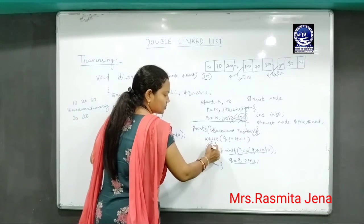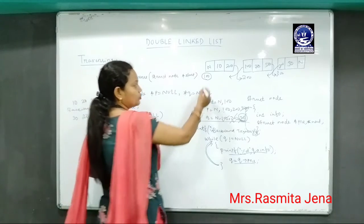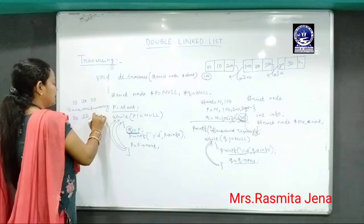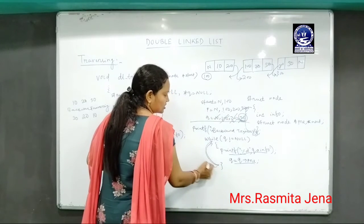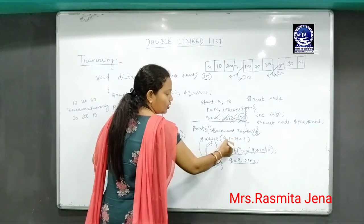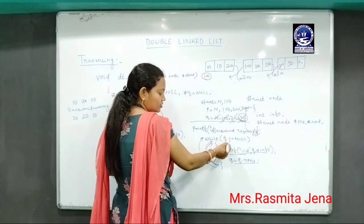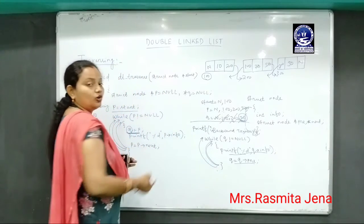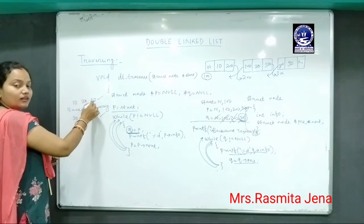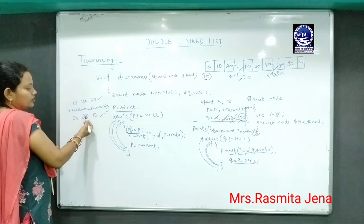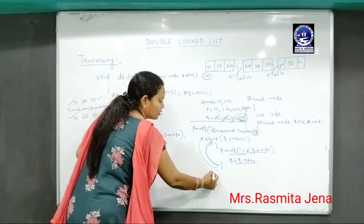As q becomes 100, I check the condition again: 100 not equal to null is true, so I display 10. Then q equals q->pre, so q becomes null. Checking the condition: null not equal to null is false, so I exit from the loop. We have traversed the nodes both forward and backward. In forward traversing it displays 10, 20, 30, and in backward traversing it displays 30, 20, 10. This is all about double linked list traversing.